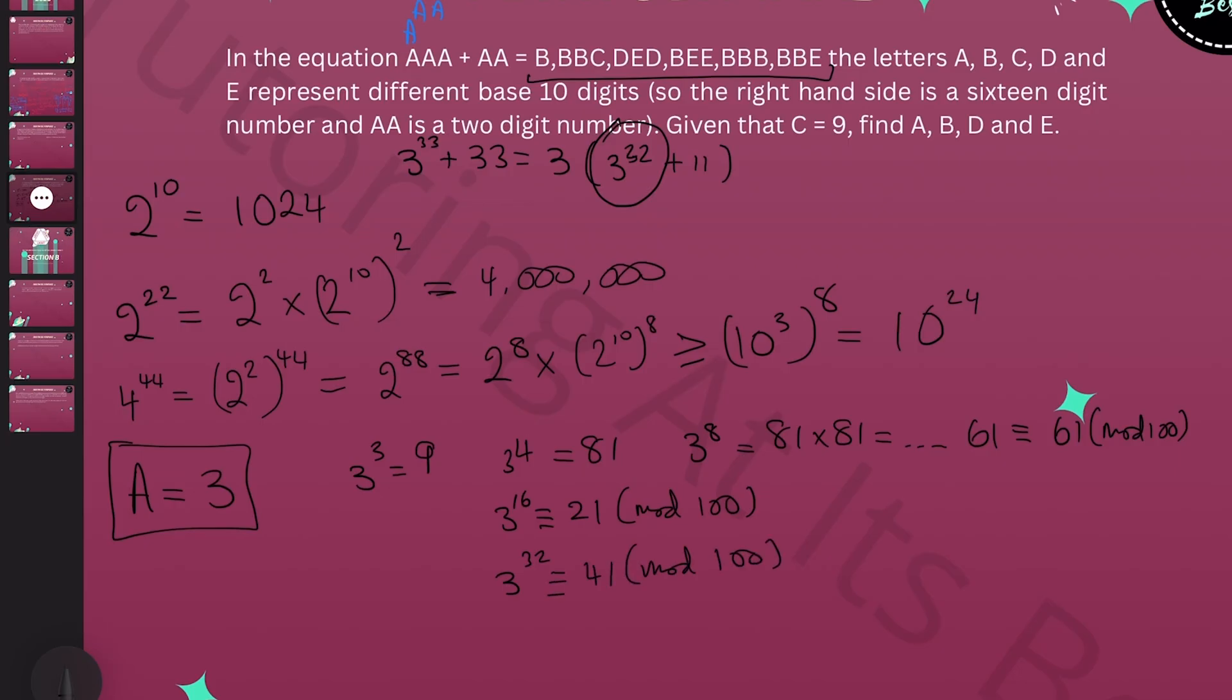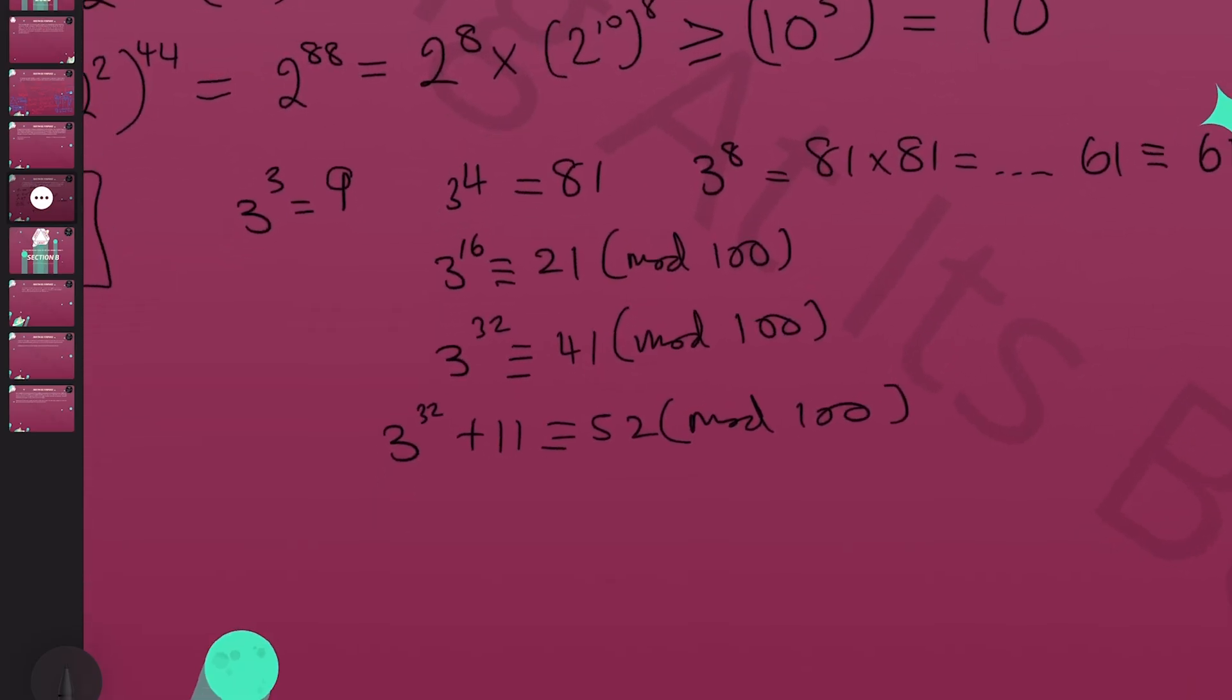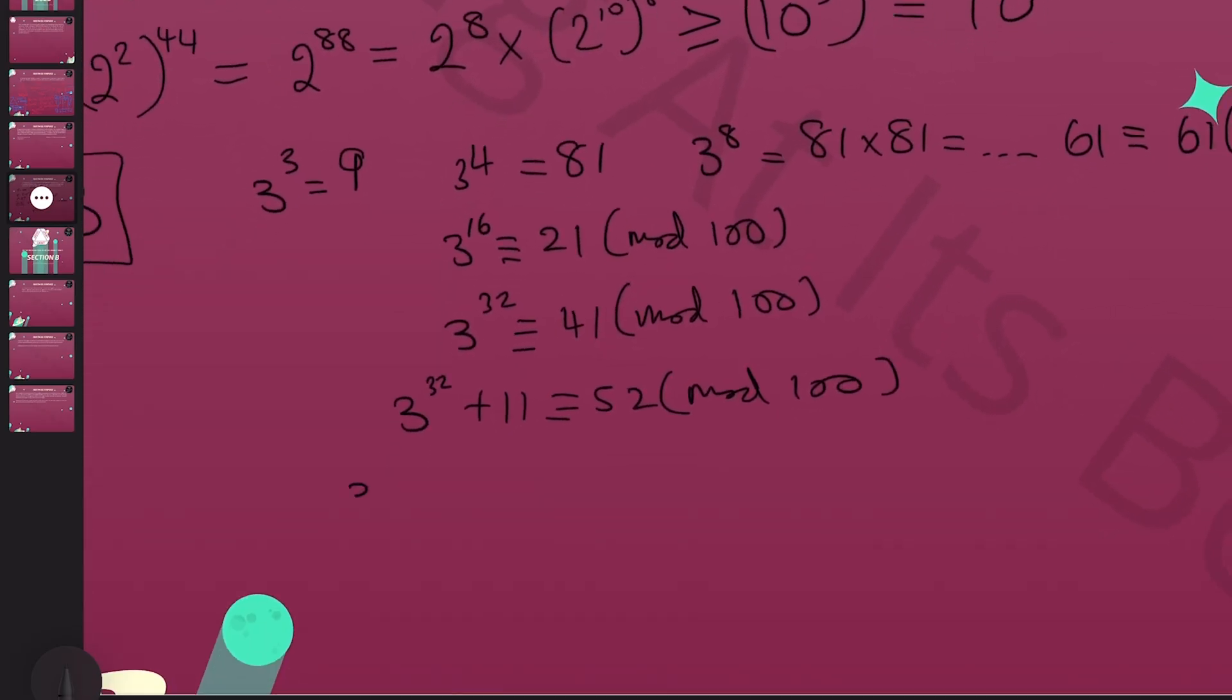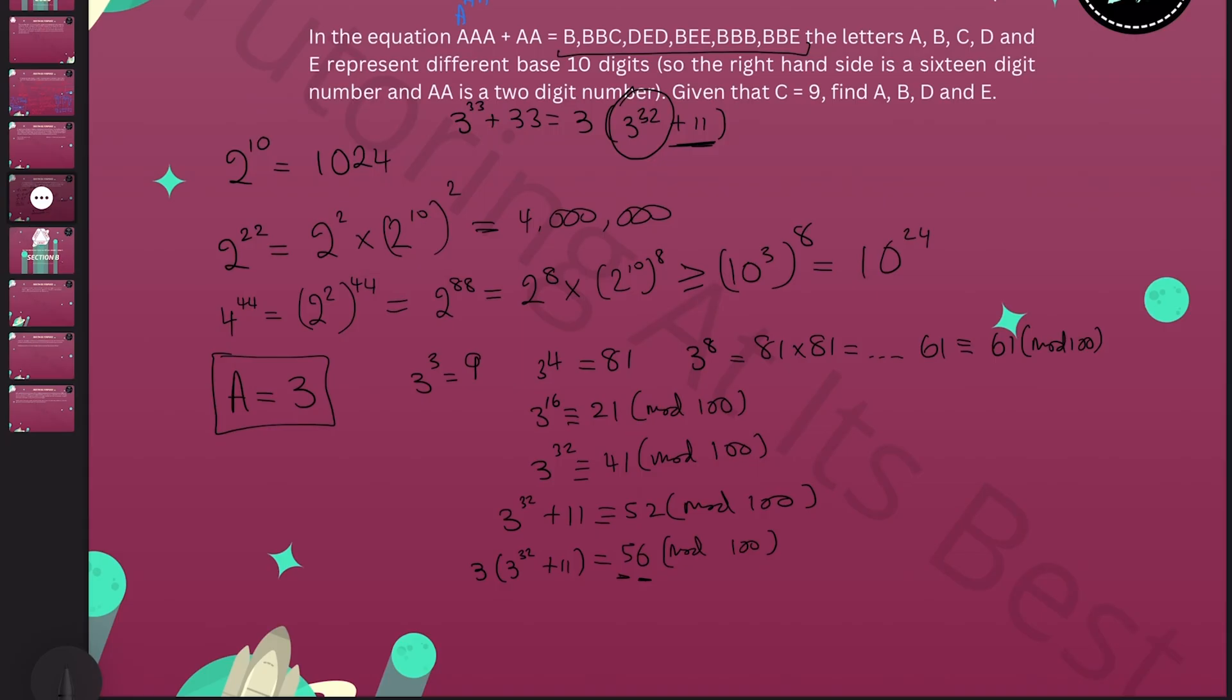So we've got there. We're going to add on the 11 as you can see it ends in that. So we'll have 3 to the power of 32 plus 11, which gives us 52 mod 100. And then if we go ahead and multiply this by 3 we get 56. Well this is brilliant news because you can see that our numbers finish with the digits 5 and 6, and that tells us that B must be 5 and E must be 6. That's our three digits so far.